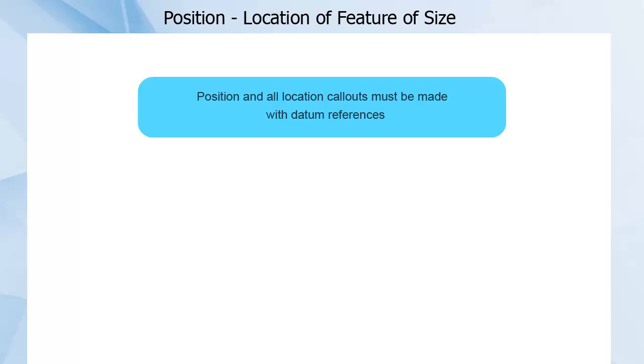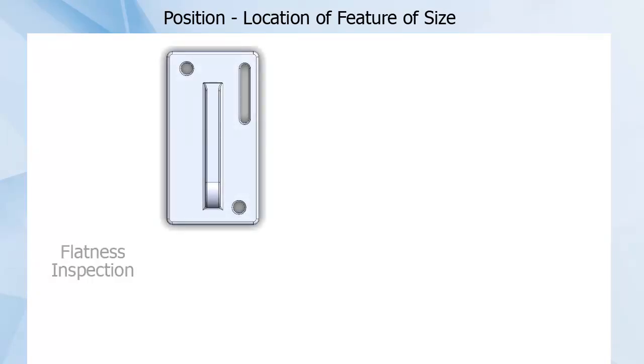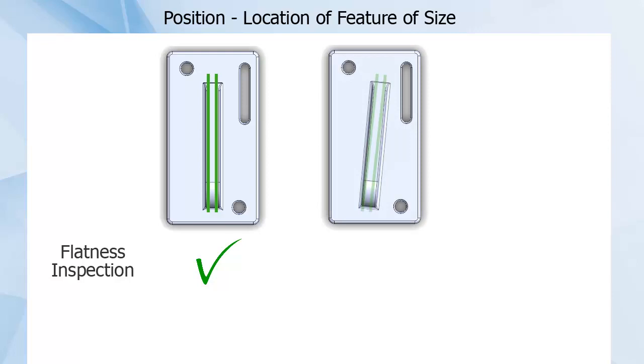Position and all location callouts cannot be given without datum references. This part could pass a flatness inspection even if the tab was at the wrong orientation or location.